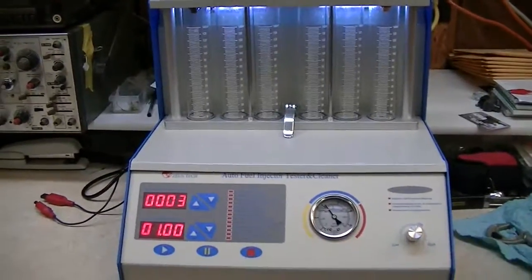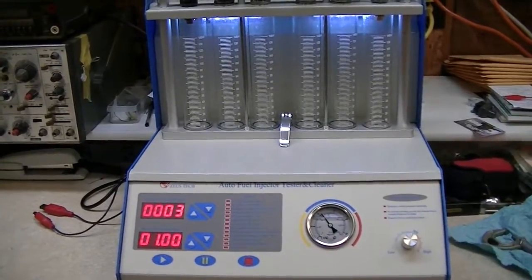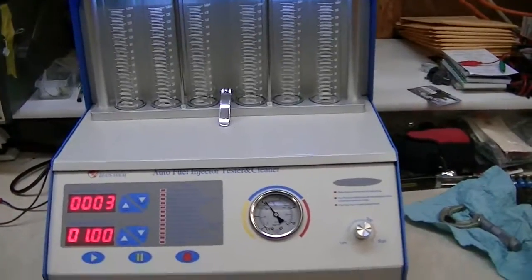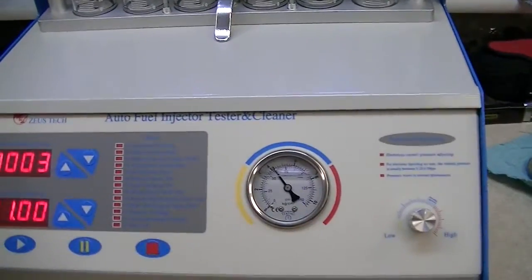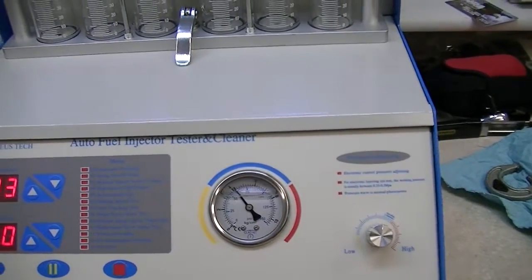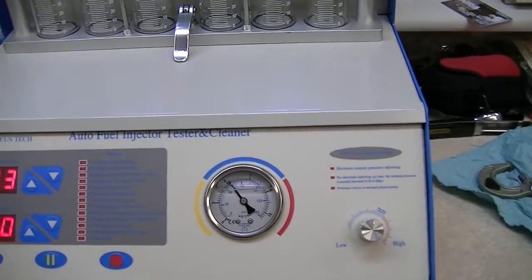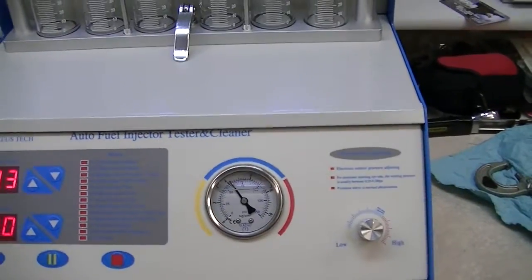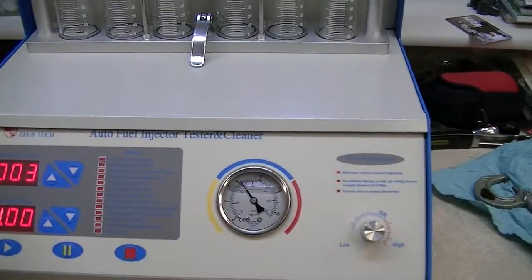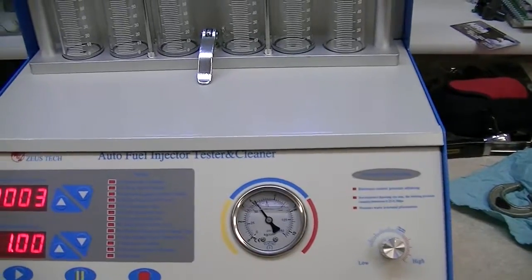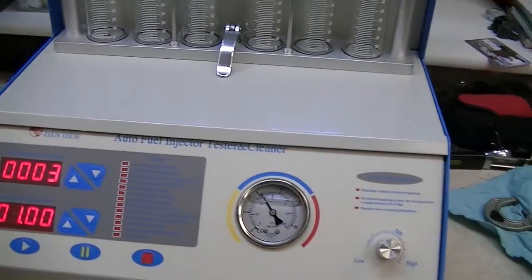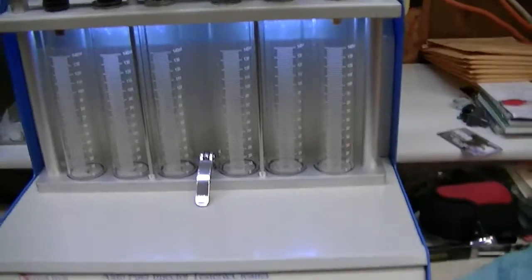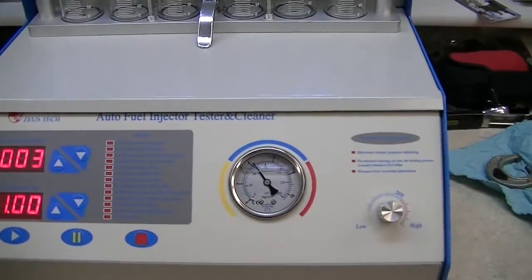But I just thought I would run it through a quick cycle here and we'll see what happens. One problem that I don't like is the pressure varies entirely too much. I have to actually start a cycle, adjust that pressure to the correct number, which is about three bar, and then shut the cycle off, dump the graduated cylinders, and then start the cycle over again.